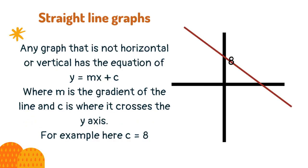Any graph that is not horizontal or vertical has the equation y = mx + c, where m is the gradient of the line and c is where it crosses the y axis. For example, here c = 8.